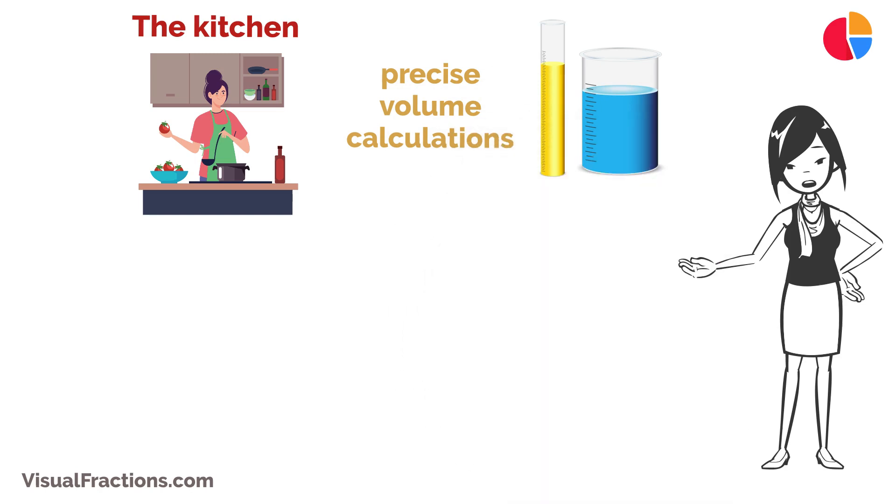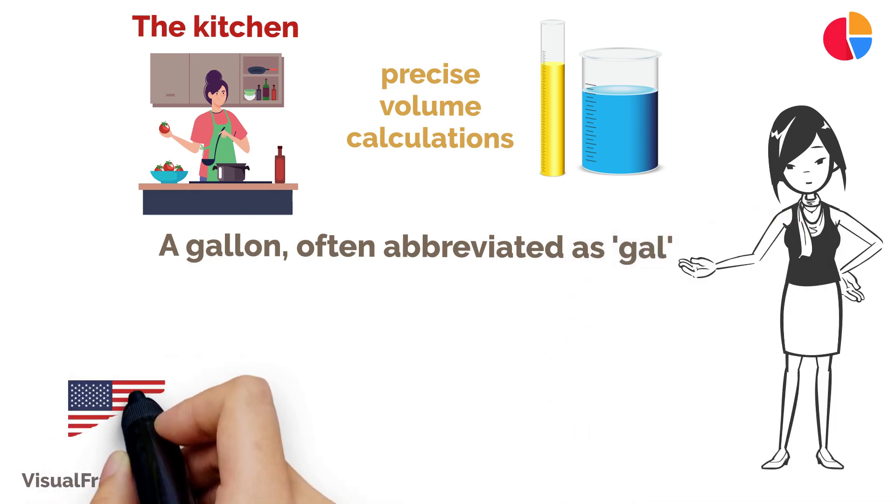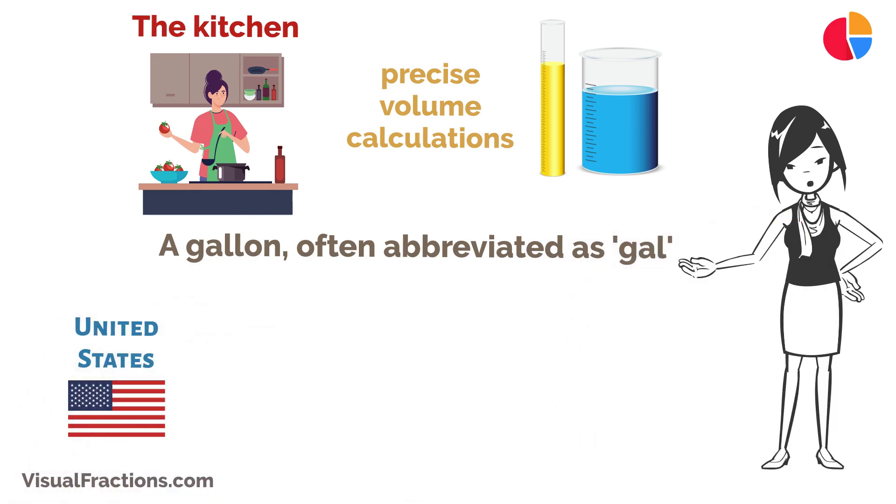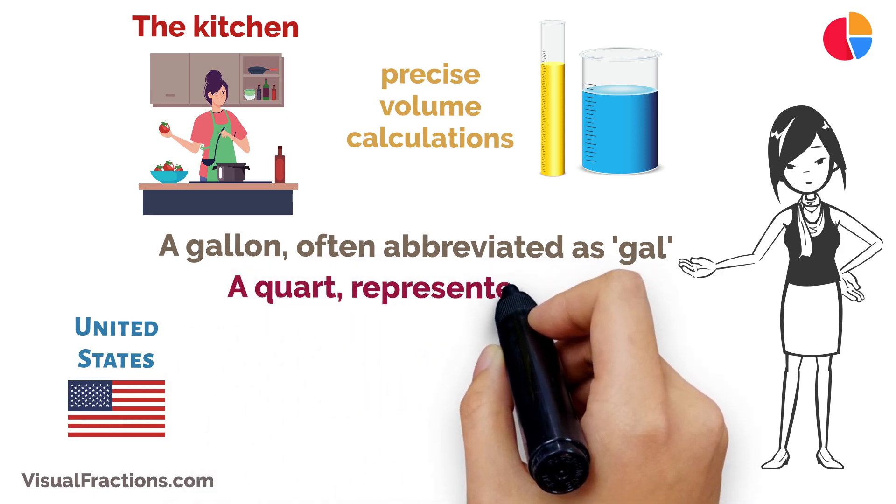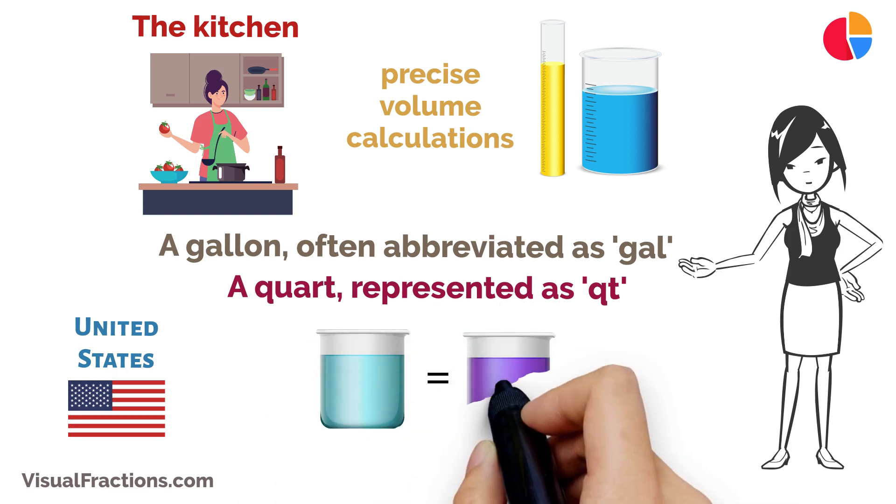Let's start with the basics. A gallon, often abbreviated as 'gal', is a unit of volume commonly used in the United States and a few other countries. A quart, represented as 'qt', is a smaller unit of volume.